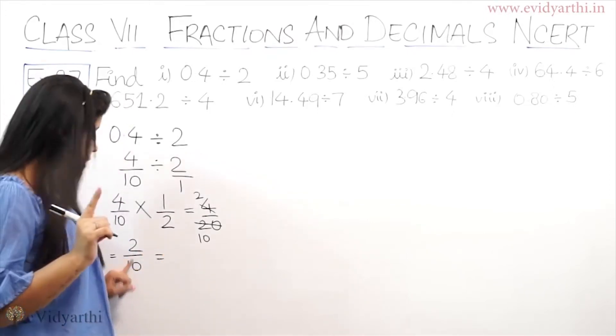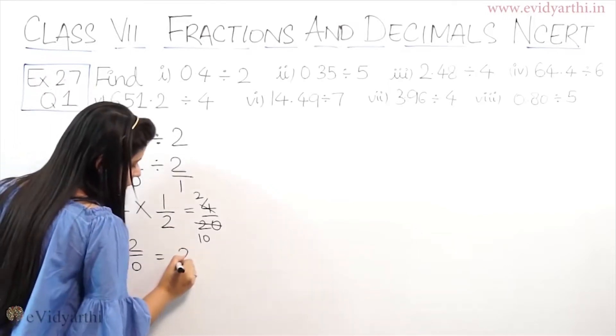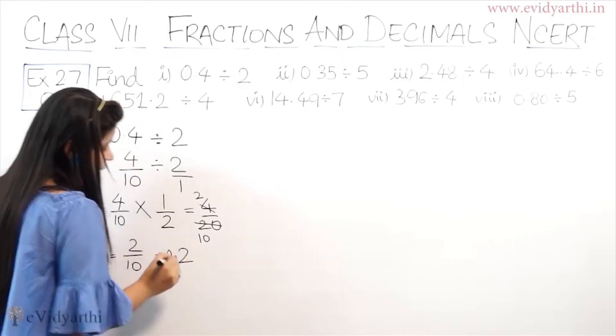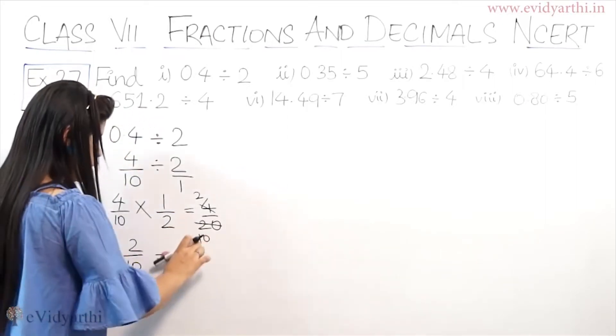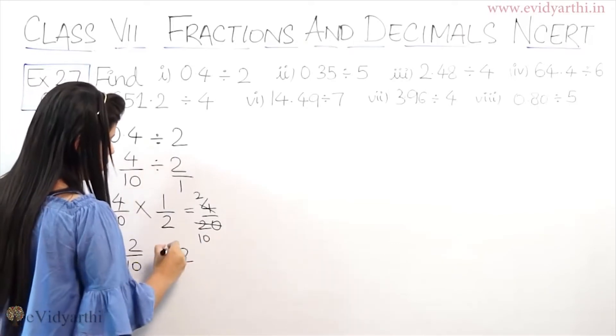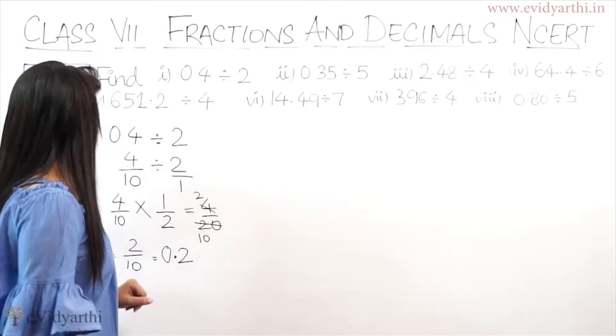Now you can convert this down to 10 in decimal. Here is a 10. This means that decimal after one number. So the decimal will be here because I need one digit. So this will be 0.2. So the answer is 0.2.